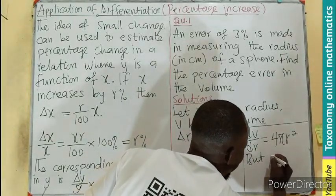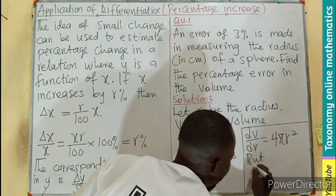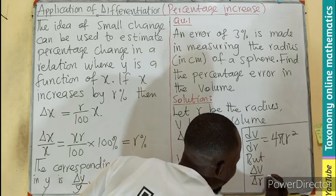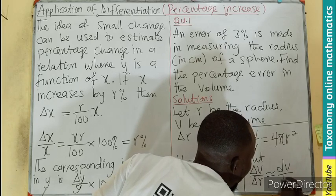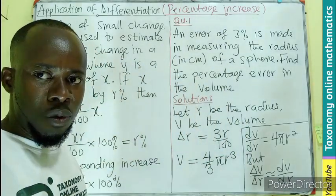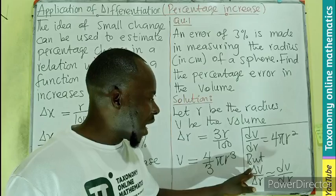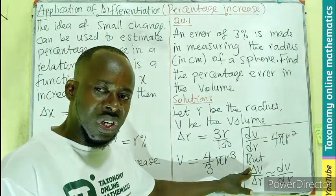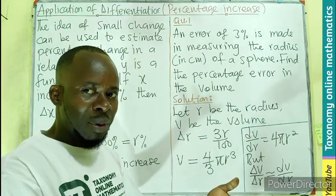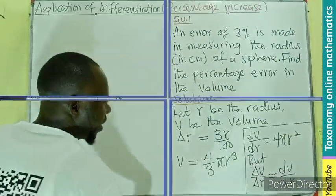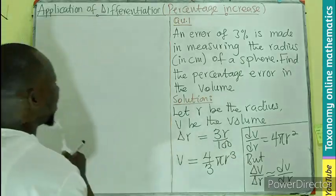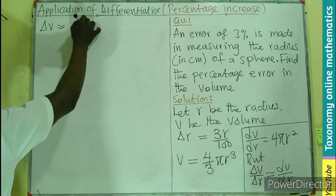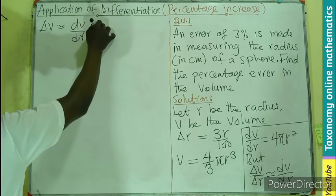We know that delta V over delta r is approximately dV/dr. That is from small change. So we already know the small change in the radius, we are looking out for the small change in the volume so that you can find the percentage.